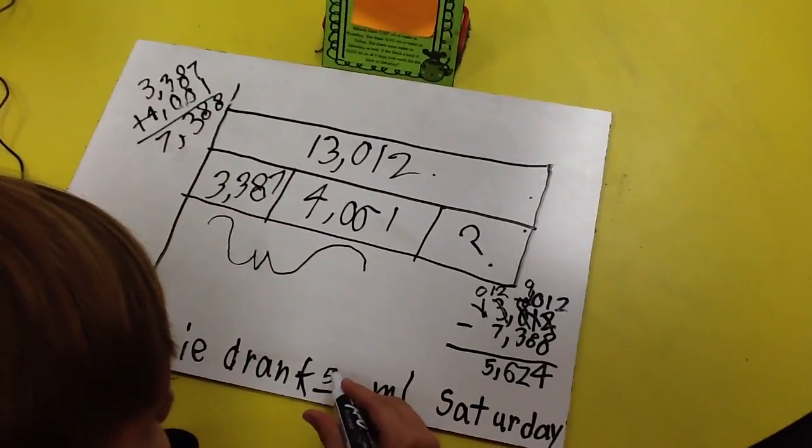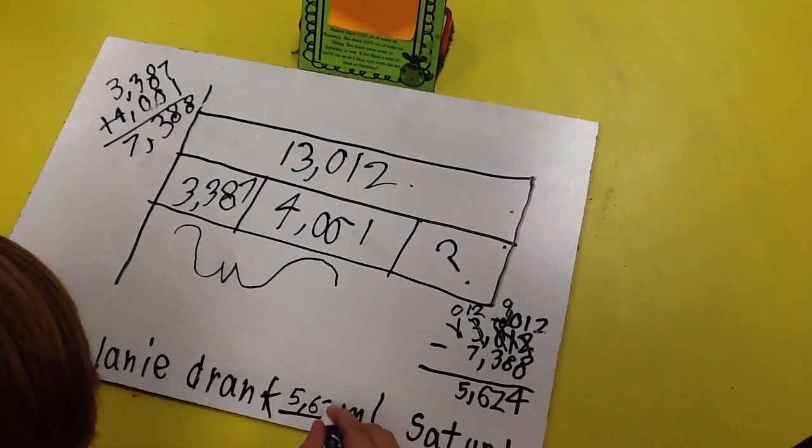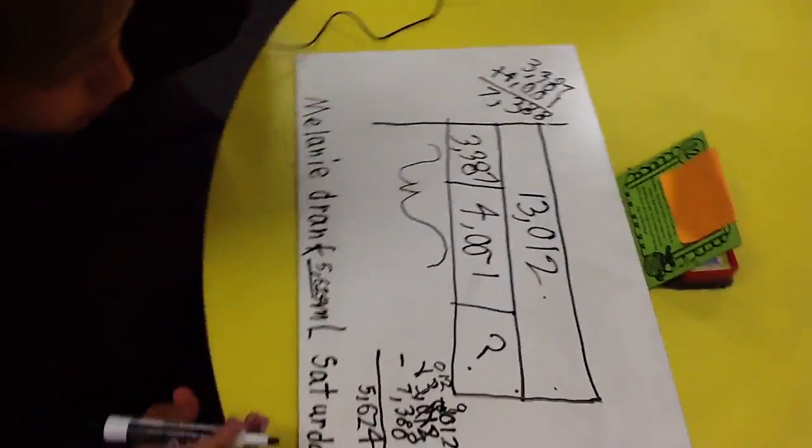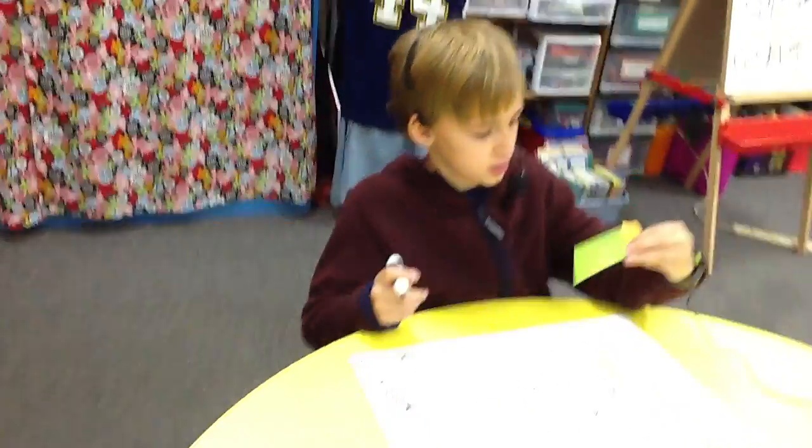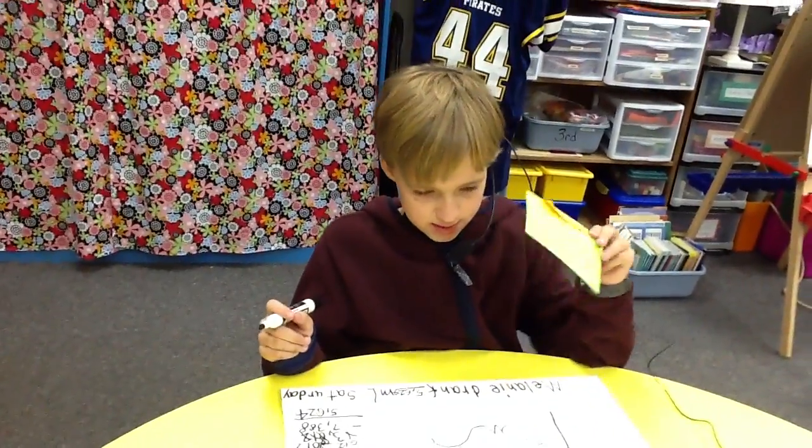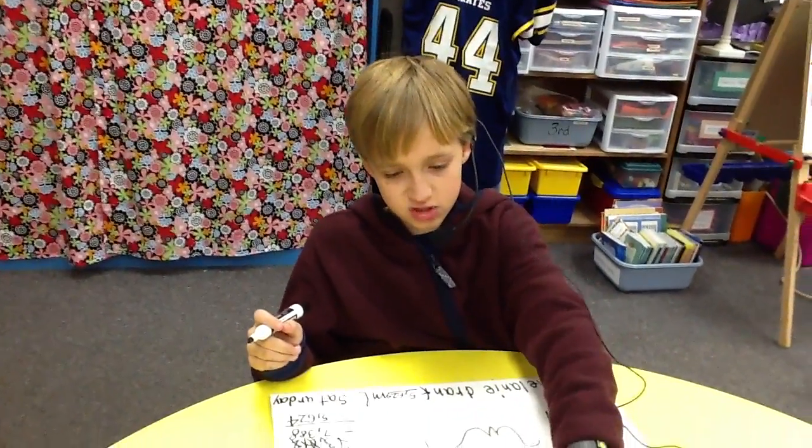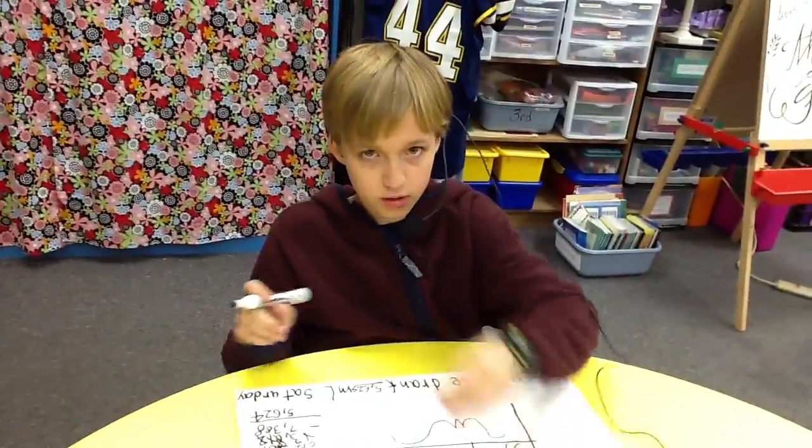So I got 5,624 milliliters of water on Saturday. And as you can see, that's the answer. And that's how you use a strip diagram to solve a multi-step problem.